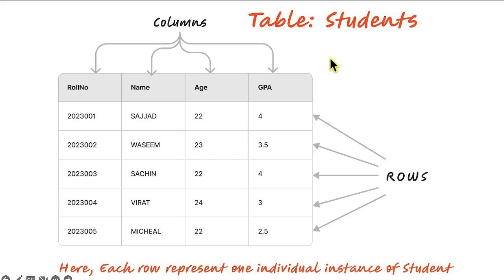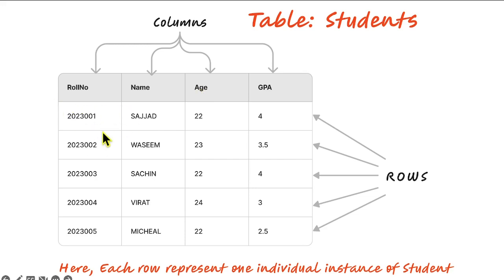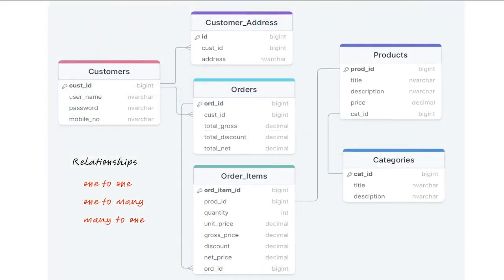The columns represent the attributes of the data, while the rows represent individual records. Here we have a table called Students with columns: roll number, name, and age — these represent the attributes of a student, and each row represents one individual instance of a student.